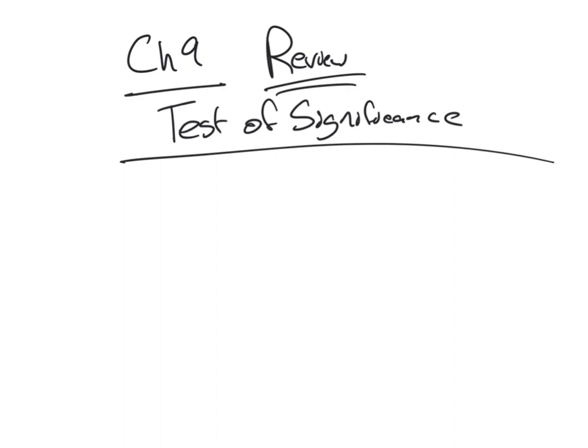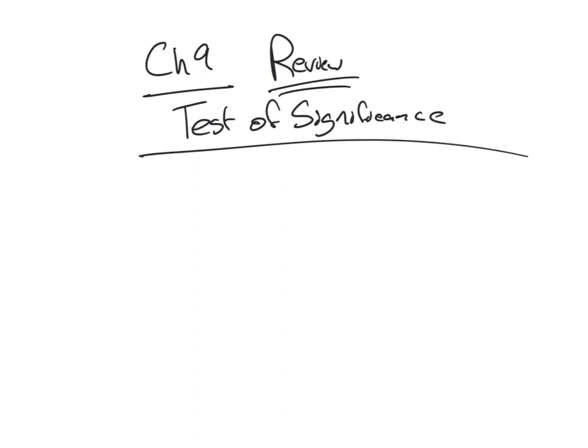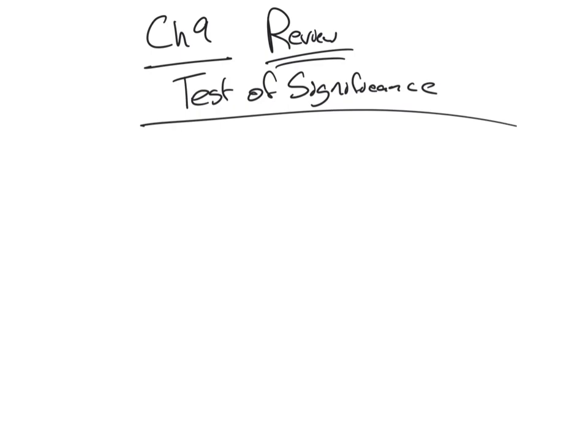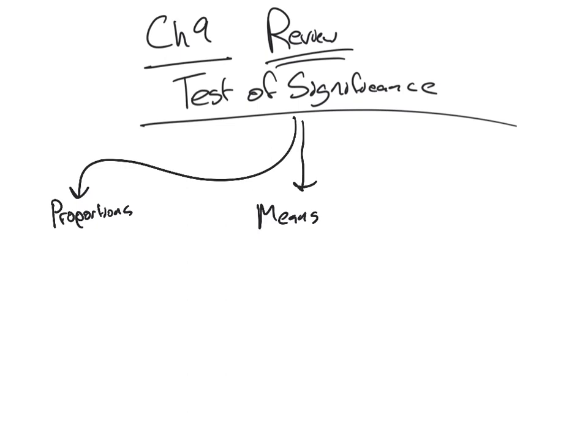We want to start with a claim, use that claim as truth, and then see whether our sample supports it or not. When we start with the test of significance, there are three different realms: it could be proportions, it could be means z, or it could be means t.